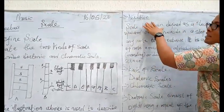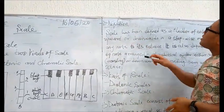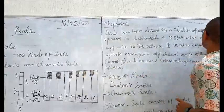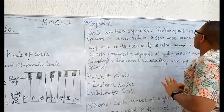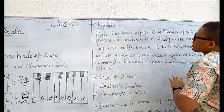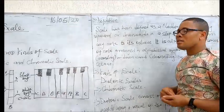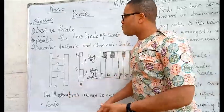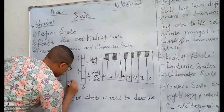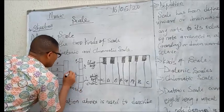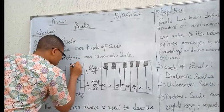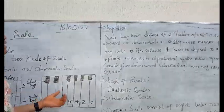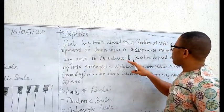Let's go over to the definition of a scale. Scale has been defined as a ladder of notes moving upward or downward in a stepwise manner from any note to its octave. This is telling us about what we illustrated here, moving from the tonic to the octave. That is what we explained as musical scale.